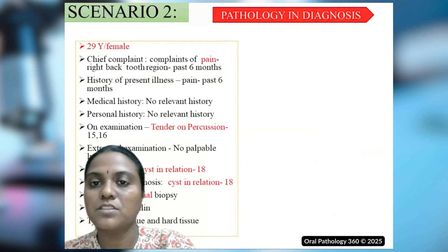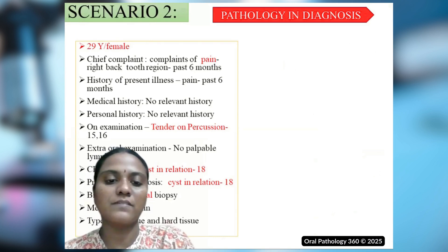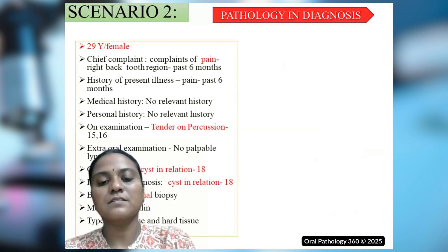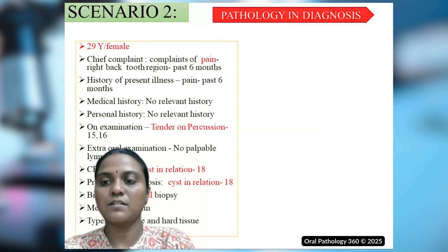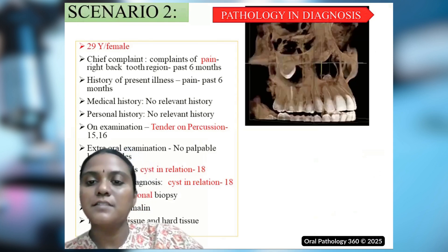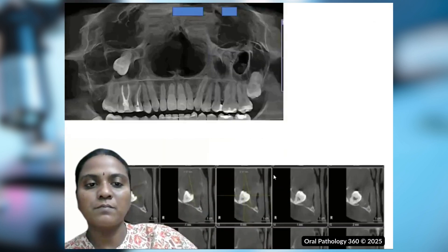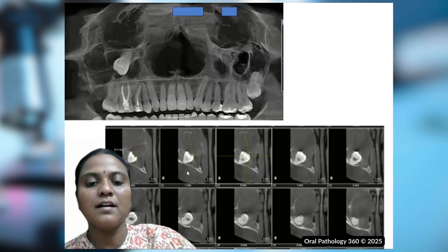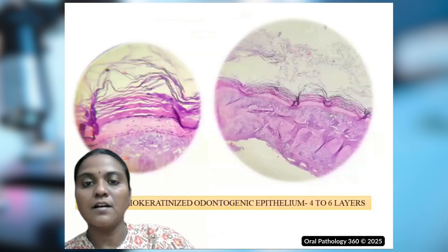The next scenario shows how pathology and pathologists play an important role in diagnosing cases. A 29-year-old female with no relevant history had tenderness on percussion on teeth 1.5 and 1.6. CBCT showed a cyst in relation to 1.8, and the surgeon gave a provisional diagnosis of cyst in relation to 1.8 and submitted an excisional biopsy. The CBCT pictures show the impacted 1.8 along with the cystic region, and the radiologist made a final diagnosis of dentigerous cyst with a differential of unicystic ameloblastoma.